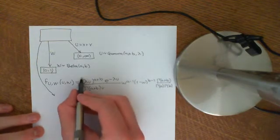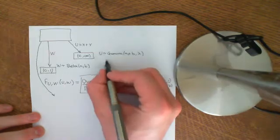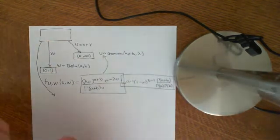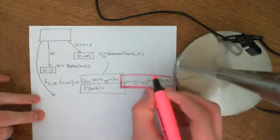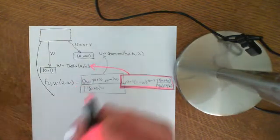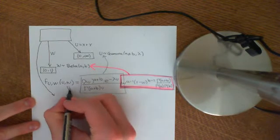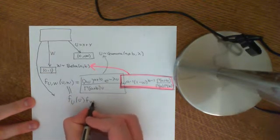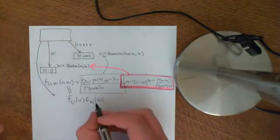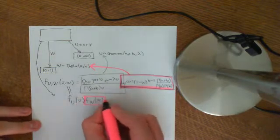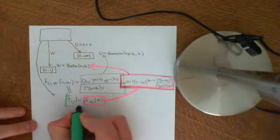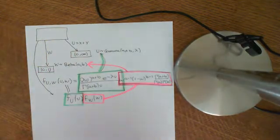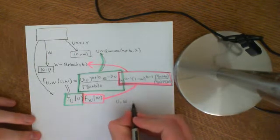What you will note is that here is just the probability density function for the random variable U. And this other part is the probability density function for the beta distribution for W. So in fact this joint PDF is just equal to the marginal distribution for the random variable U as a function of little u, times the marginal distribution for the random variable W as a function of little w. That implies that U and W are independent — that is exactly the definition of independence, that a joint probability distribution factors like this.